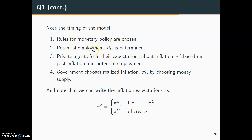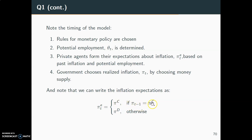The second step is that potential employment is determined or announced. Then in the third step, private agents form expectations about inflation π_t^e based on past inflation and potential employment. Fourth and finally, the government chooses realized inflation π_t by choosing money supply — m_t is simply equal to π_t. We can also write the inflation expectations formally: π_t^e equals the commitment inflation level if π_{t-1} equals the commitment level, and the discretionary level otherwise.